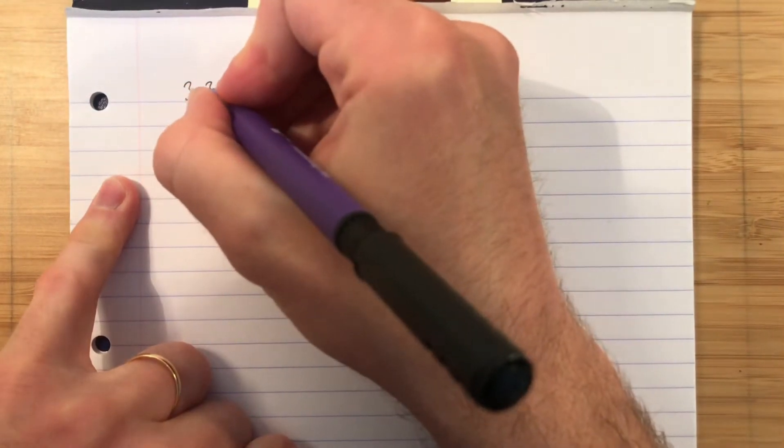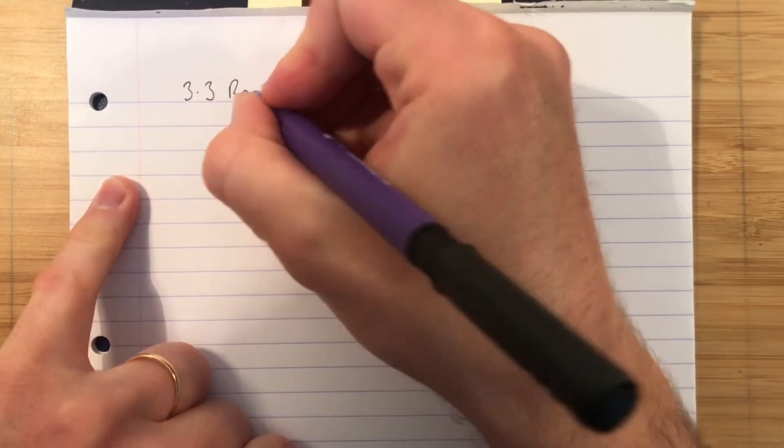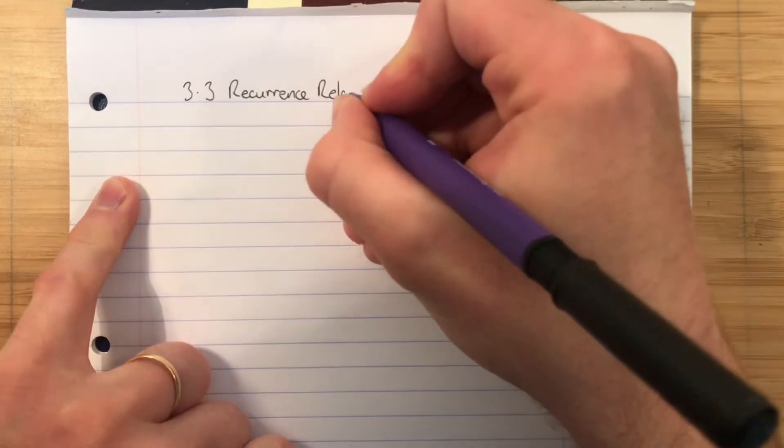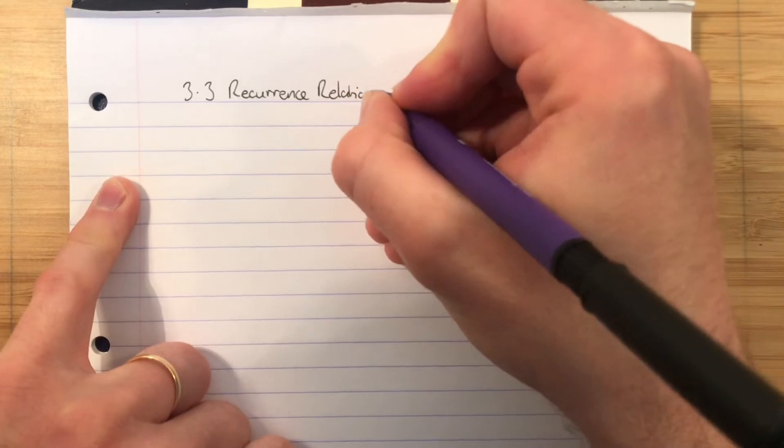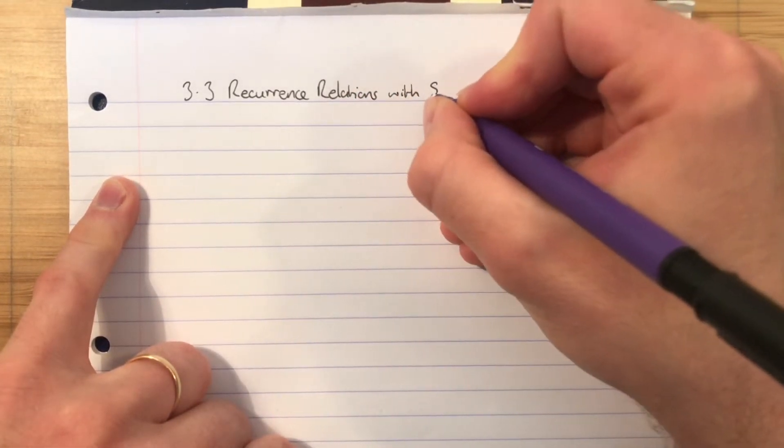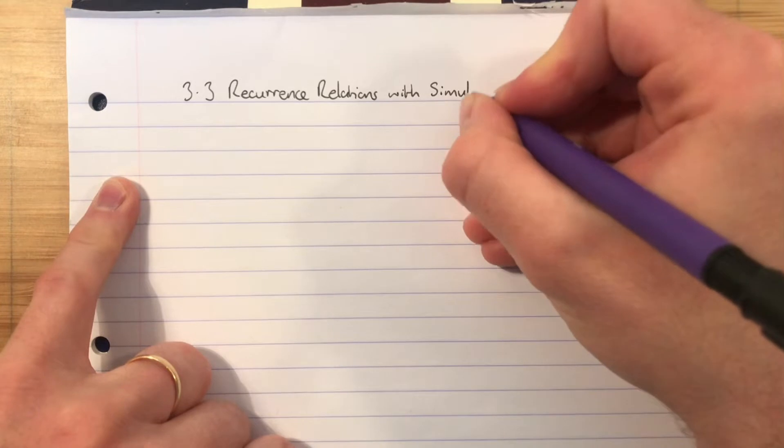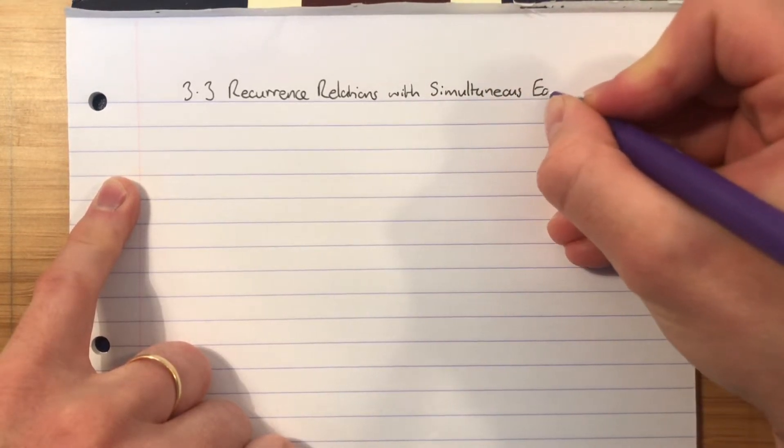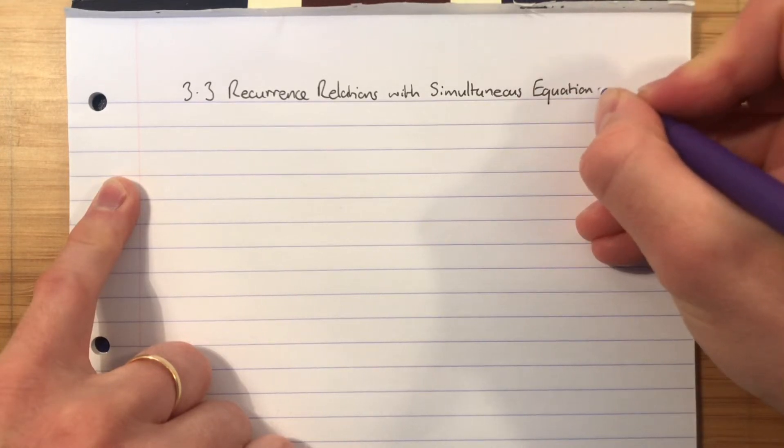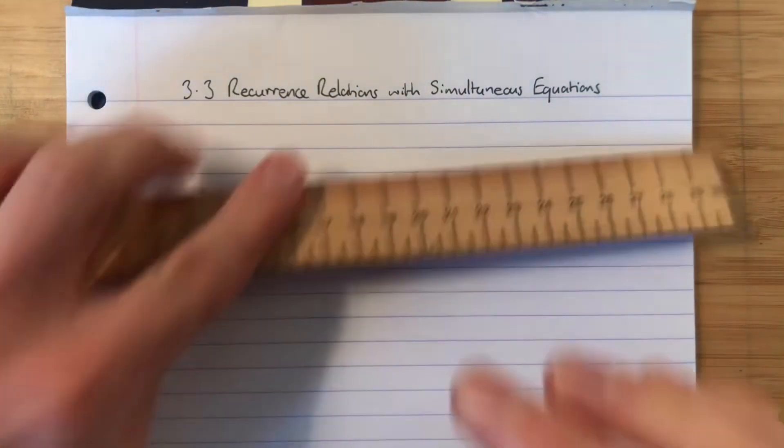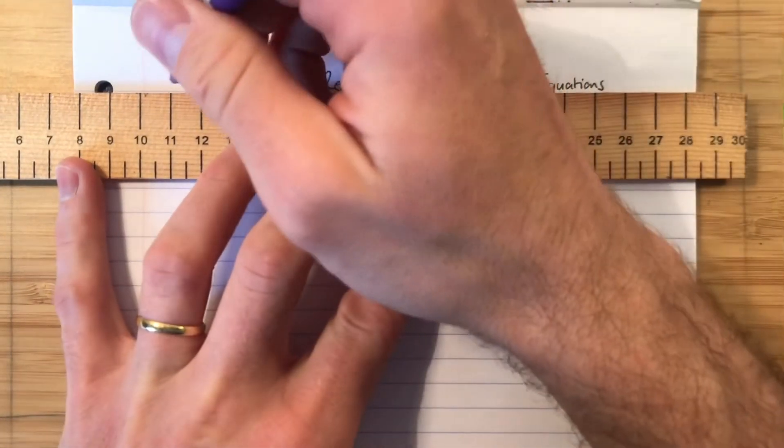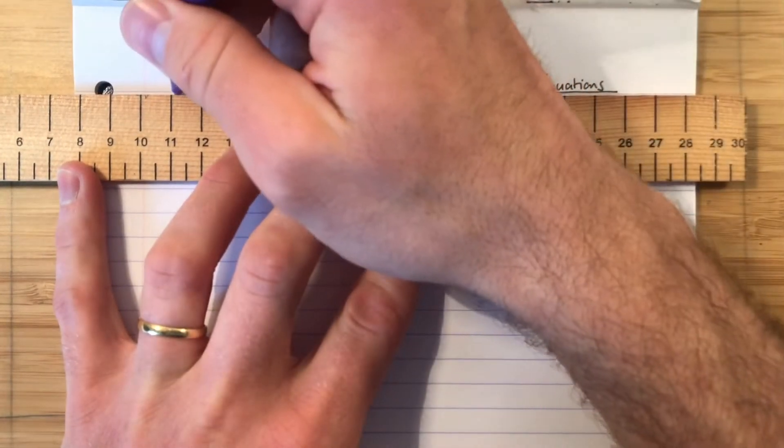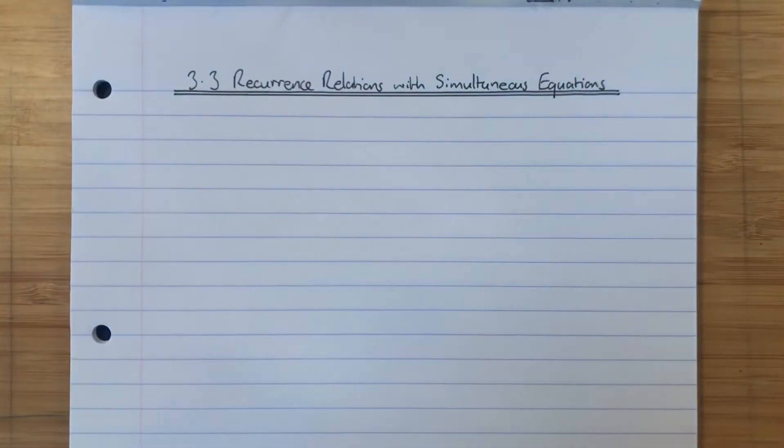3.3 Recurrence Relations with Simultaneous Equations. Okay, this is a very specific chapter title, but it's because it's something that's a standard example. It's worth giving its own title.